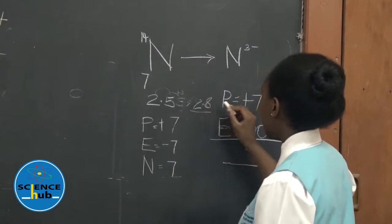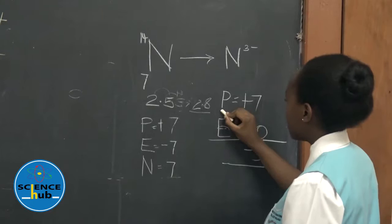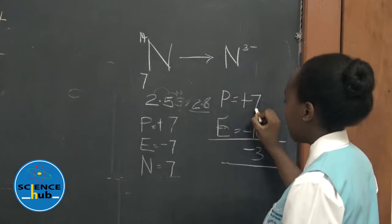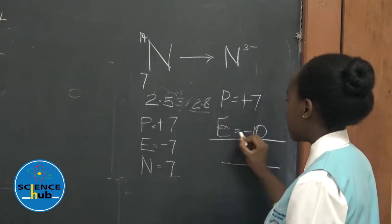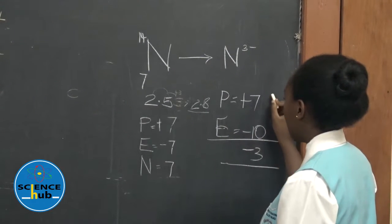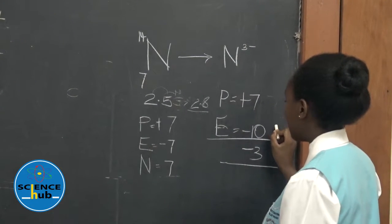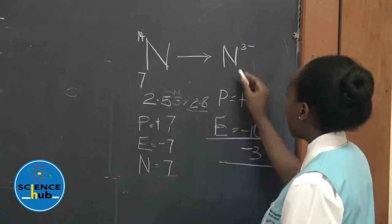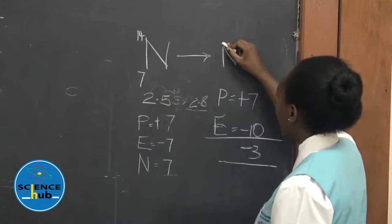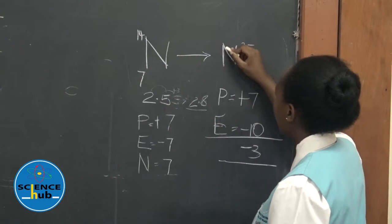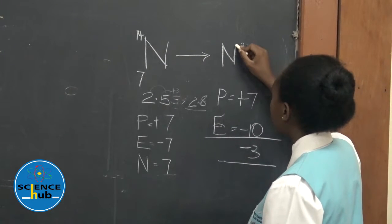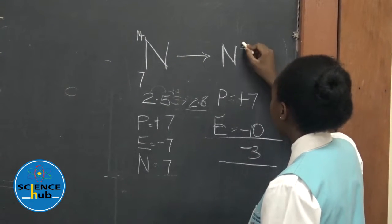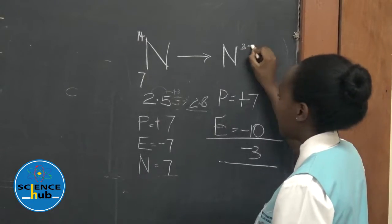From 2-8, we get that the protons will be 7 and electrons will be 10. When we subtract these, we will get negative 3, forming the ion for nitrogen, which will be nitrogen 3 negative.